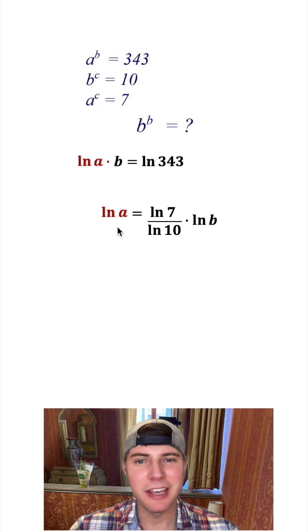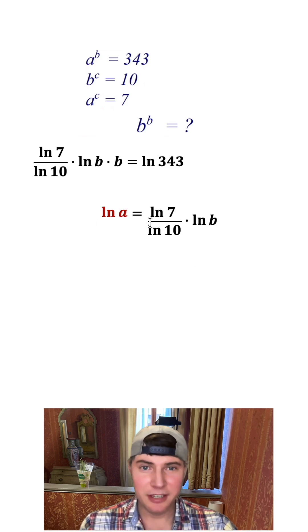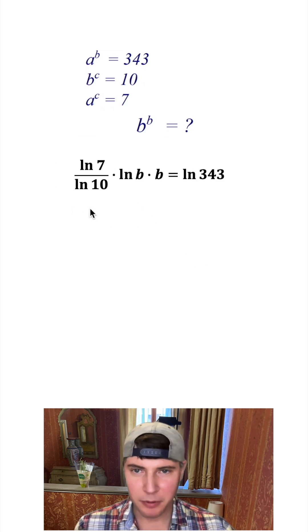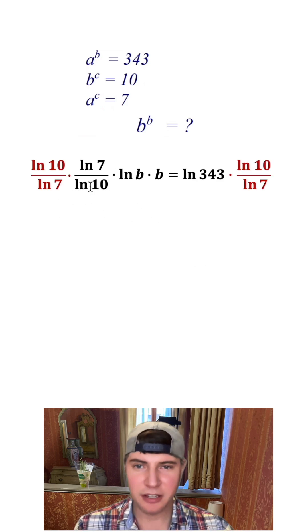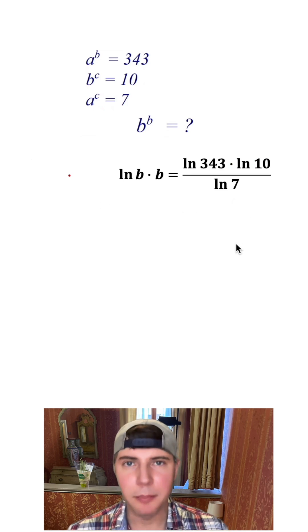Now we have the natural log of a by itself, and I want to substitute all of this stuff into the natural log of a. There we go. So this was substituted into here. And now we don't need this anymore. Let's bring this down here. Let's multiply both sides by the reciprocal of this. Left-hand side, these cancel. And on the right-hand side, this can become a single fraction.